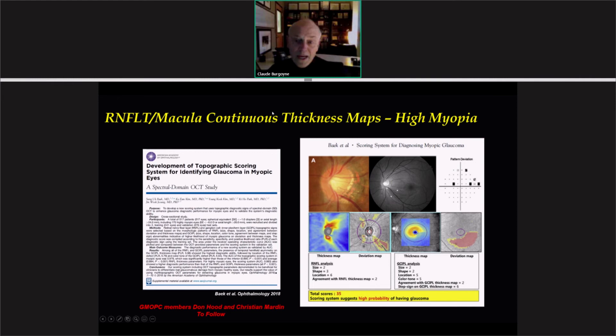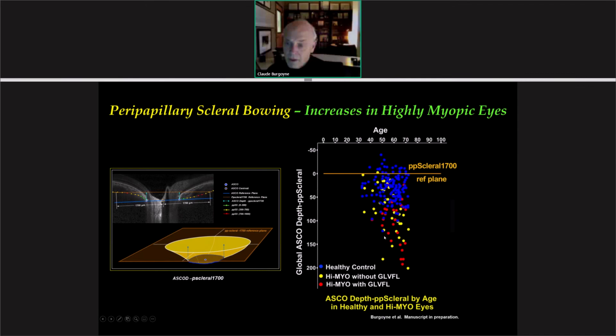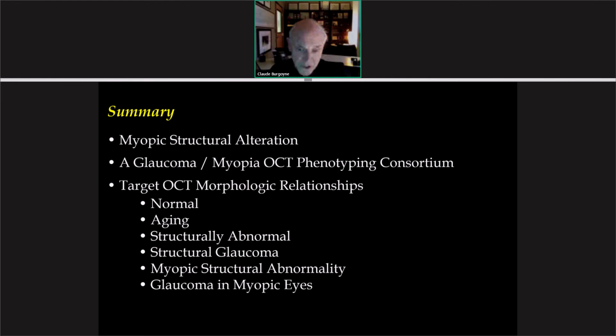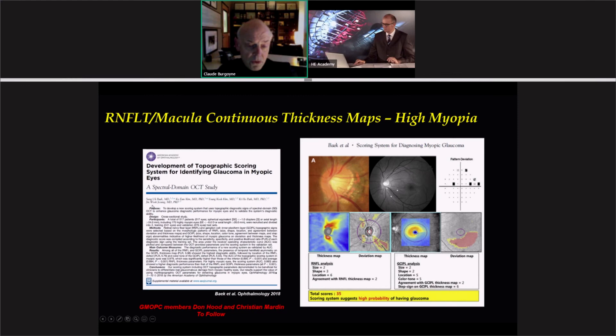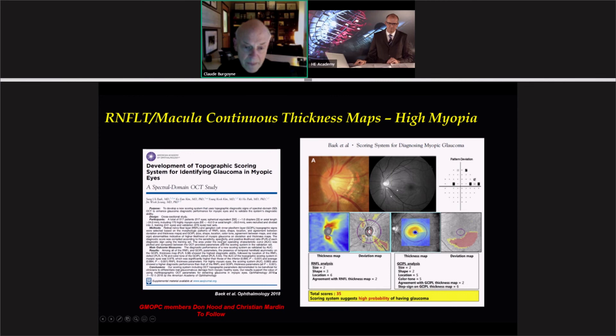Peripapillary scleral bowing also increases in highly myopic eyes. Using the depth parameter — normals in blue — you can see that highly myopic eye bowing is generally larger than the normals, although there's overlap. In this instance, there was significantly more bowing in the highly myopic eyes with glaucoma compared to those without. Continuous thickness strategies in the macula are being developed; this is a strategy by Jin Woo-jung, who is in Seoul, Korea, and also a GMOPC member. Don Hood and Christian Martin will also be talking about their own strategies for this, in both non-highly myopic and perhaps highly myopic eyes.